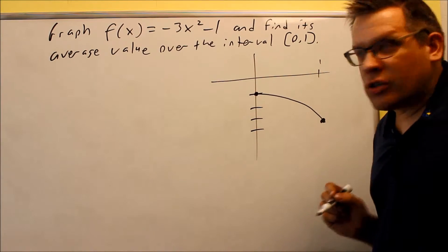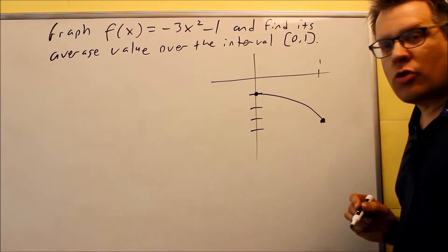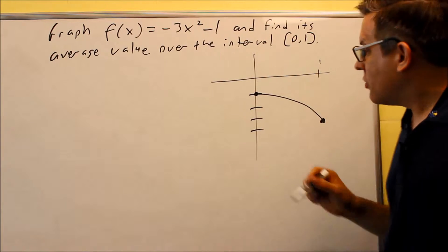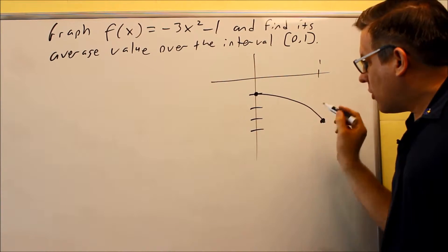So that's probably the quickest way to do it, is just plotting some points. If you're unsure with the graph and you don't have a calculator or technology available, you can always plot a couple points to get it. We know it's opening down, so there's your graph.